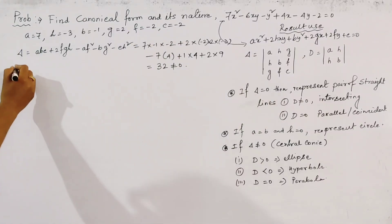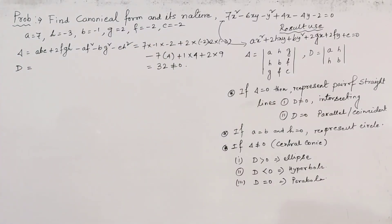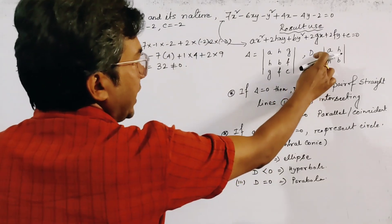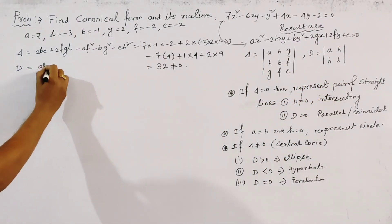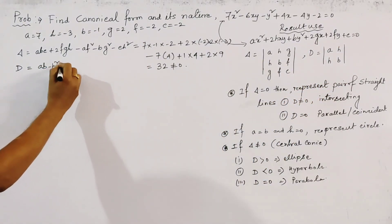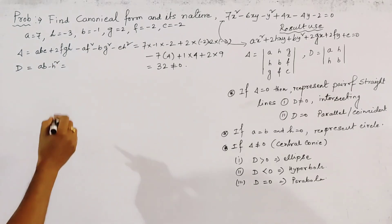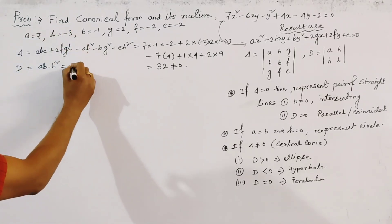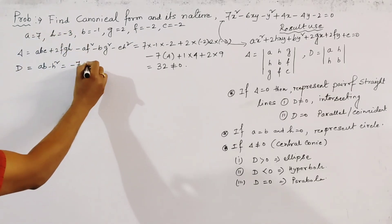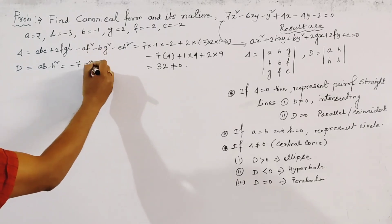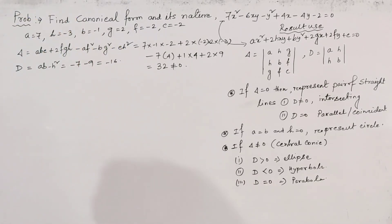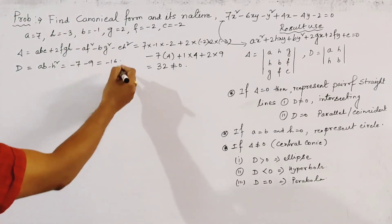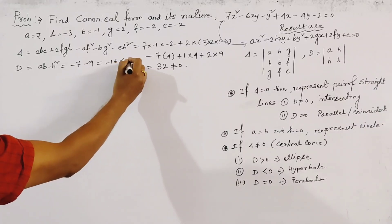Now we find D, which is given by ab - h². So D = (7)×(-1) - (-3)² = -7 - 9 = -16, and we note that D is less than 0.